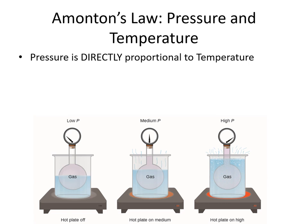Our first gas law is Amontons' law. Amontons' law tells us that pressure and temperature are directly proportional — as one goes up, the other goes up; as one goes down, the other goes down. We can write this as an equation: pressure is proportional to temperature, or as an equality: pressure equals some constant times temperature.